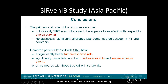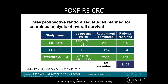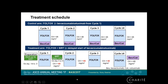Looking at other tumor entities, the FOXFIRE results were also presented in Chicago. They dealt with liver metastases from colorectal cancer — as we have heard, 40 to 50% of patients with colorectal cancer develop liver metastases. The idea was to add radioembolization to the FOLFOX treatment as first-line therapy to improve local control and possibly overall survival. Three studies were pooled together — the SurFox trial from Australia and New Zealand, one from Europe, the Middle East, and the US, and another from the rest of the world — totaling 1,103 patients.